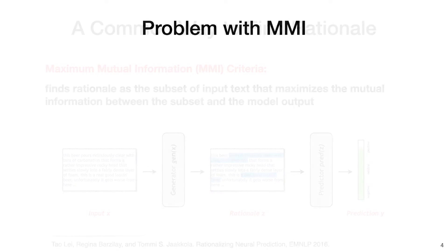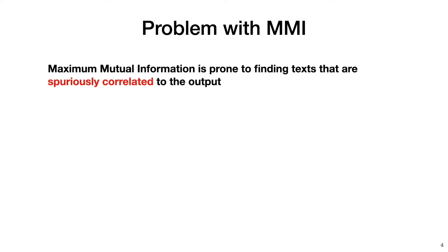However, there is one problem with the MMI criterion. Since it only focuses on maximizing the probabilistic correlation between the rationales and the output, it is prone to finding texts that are spuriously correlated to the output.